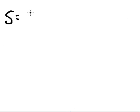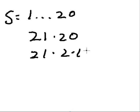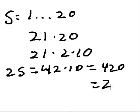Let's do it real quickly. Sum up everything from 1 to 20. Well, 20 plus 1 gives me 21. How many of these 21's? 20 of them. So 21 times 20 is the same as 21 times 2 times 10. 2 times 21 is 42, times 10 is 420. That's what 2s equals. Divide by 2, and we get 210.